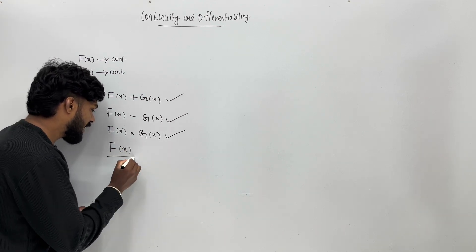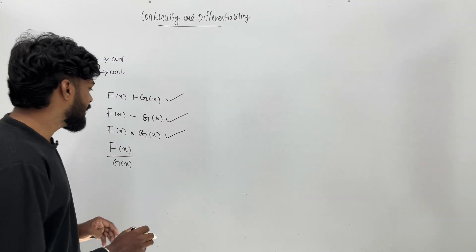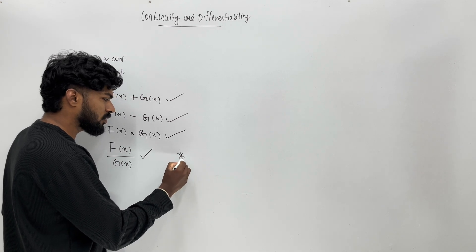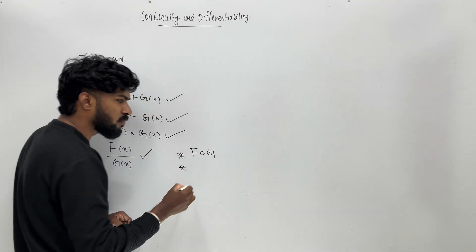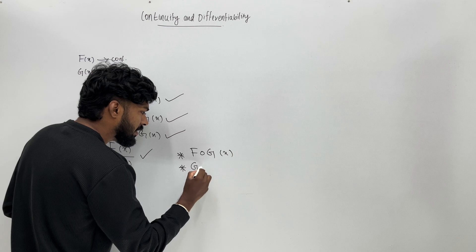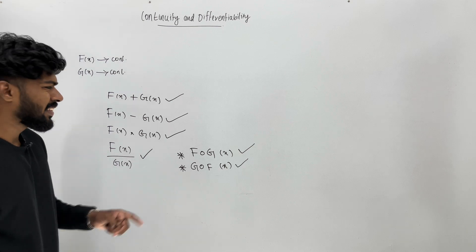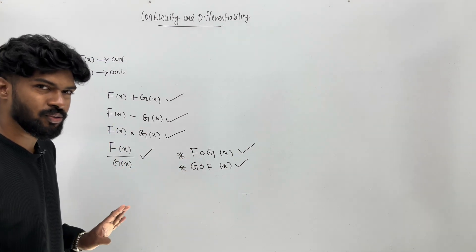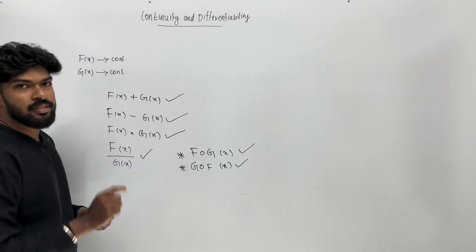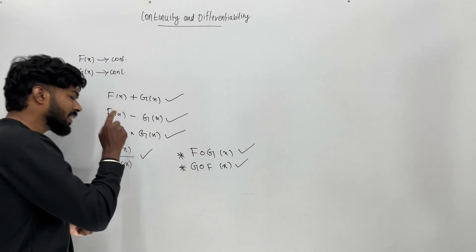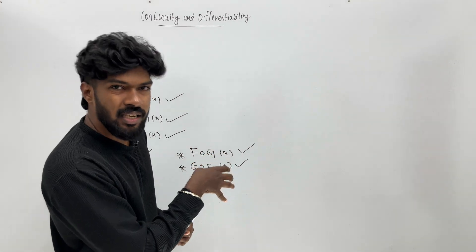F of x will divide g of x, and that will be continuous. This is the important title. This involves composition — using a composition of functions. If the two functions are continuous, then their division is also continuous, as long as the denominator is not zero.